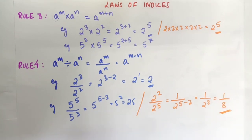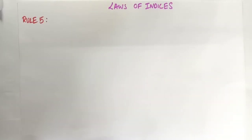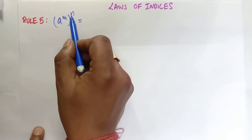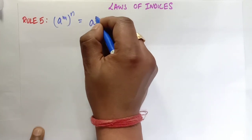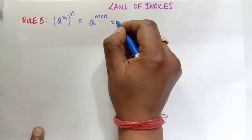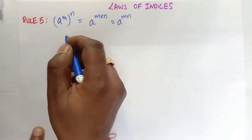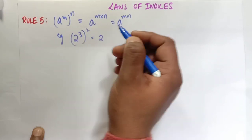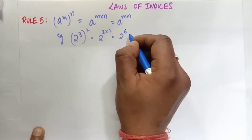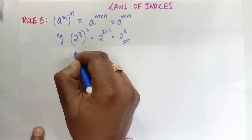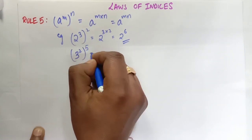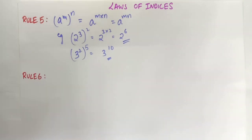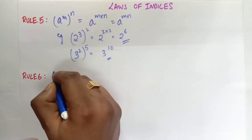Rule number 5: (a to the power m) to the power n equals a to the power m times n — the powers are multiplied. For example, (2 to the power 3) squared gives 2 to the power 6. Another example: (3 squared) to the power 5 gives 3 to the power 10.